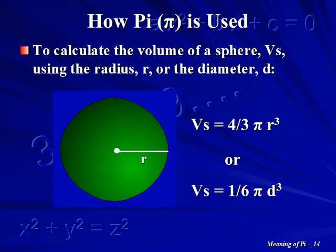To calculate the volume of a sphere, VS, with the diameter, D, use the equation VS equals 1 sixth times Pi times D cubed.